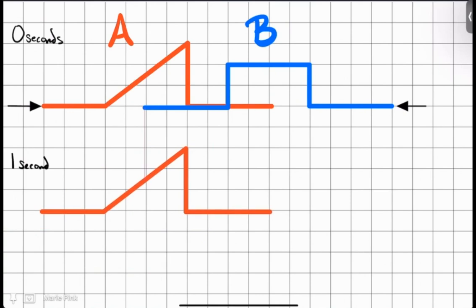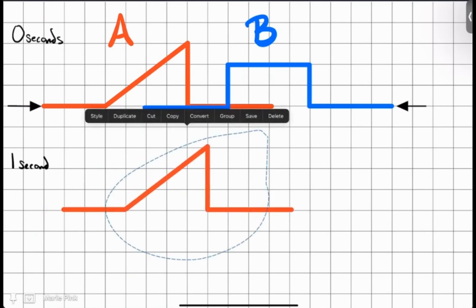If each one moves one box per second, if it was here at zero seconds, then it'll be here at one second. And the B wave is going to move to the left the same way.